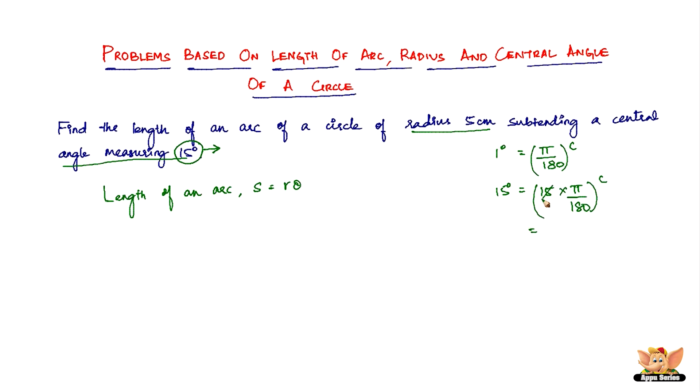So that is nothing but 15 goes 12 times in 180, and we have pi by 12 radians is theta.